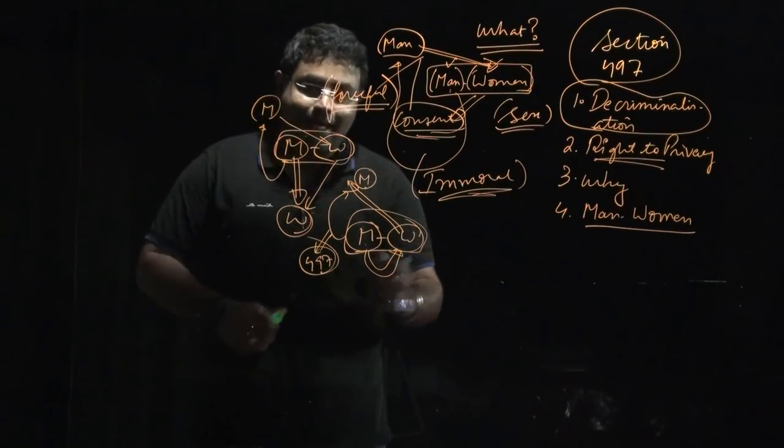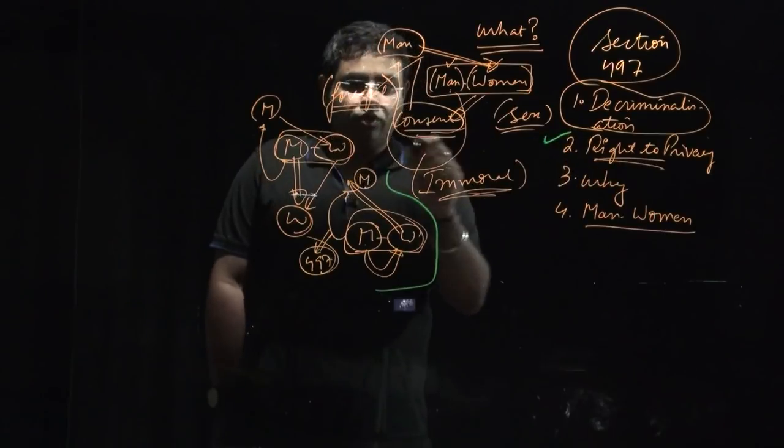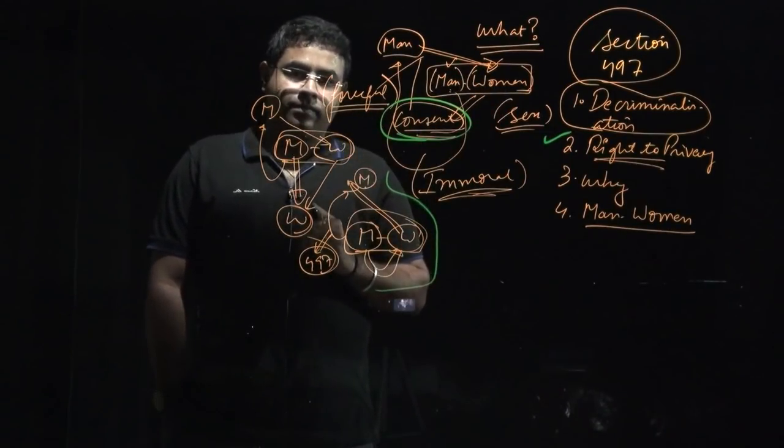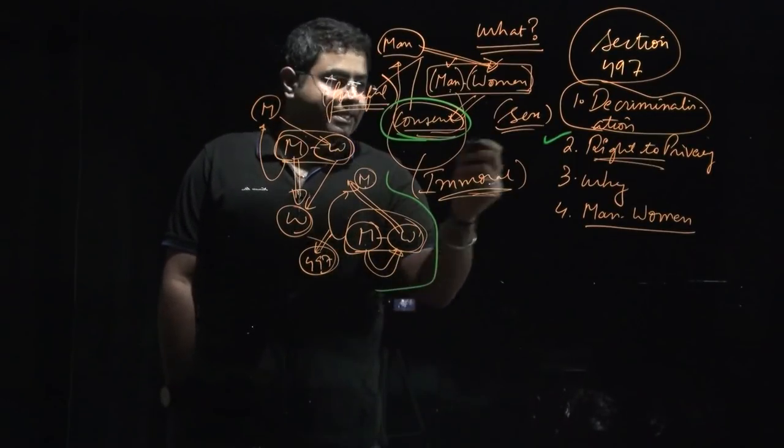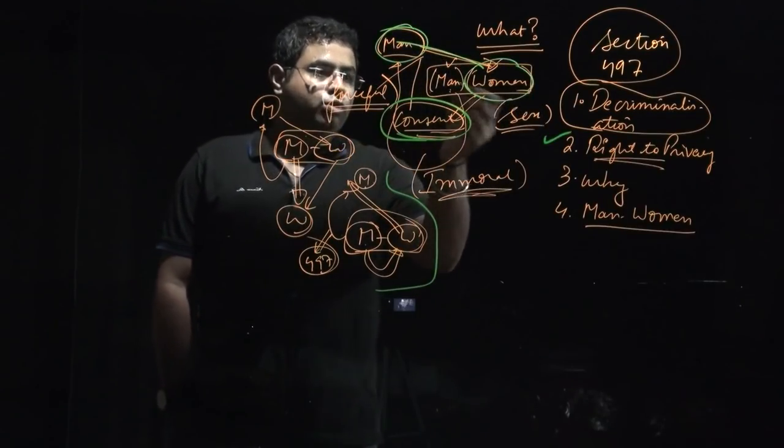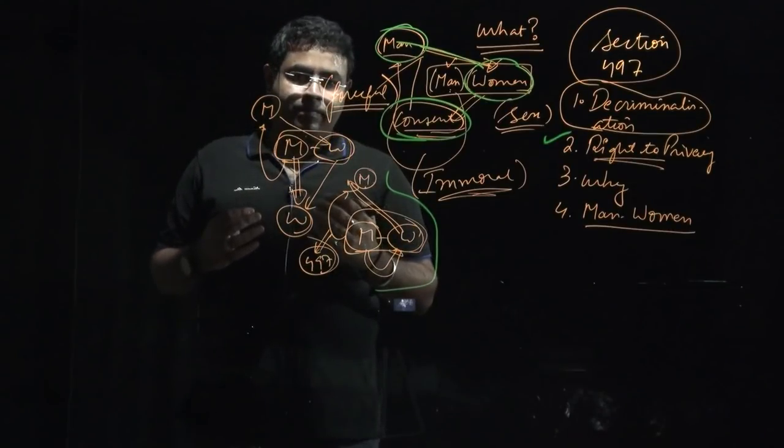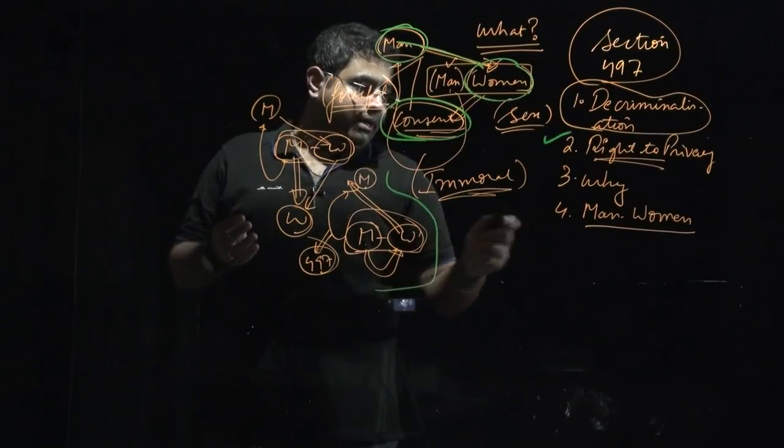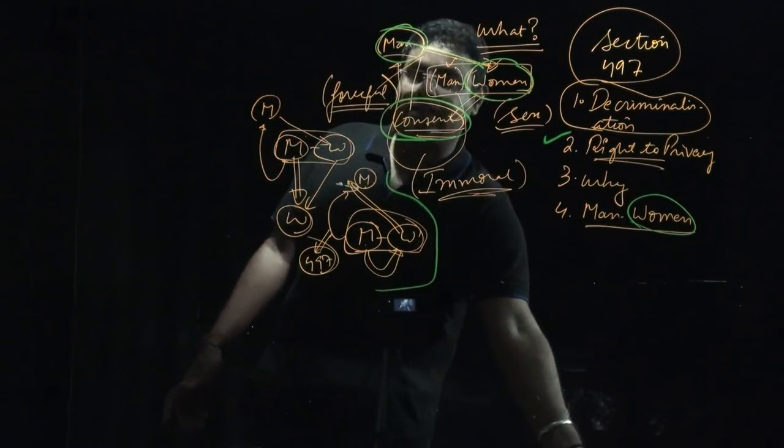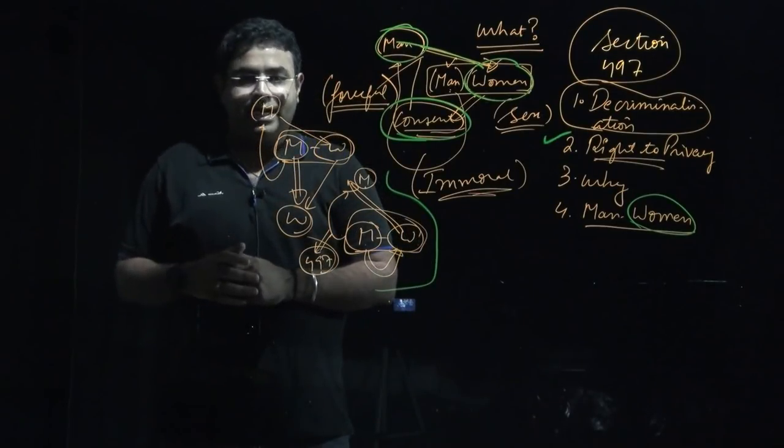This is the aspect of the law that is criticized. This law is criticized on various grounds. There is decriminalization, privacy, and the concern that with consent, the institution of marriage will be ruined. If any woman goes outside and has an affair, then marriage will have no meaning, morality will have no meaning. And some liberal people say that women should also have the right to file a complaint against their husband if the husband is indulging in extramarital activity. This entire issue is about Section 497 and CrPC Section 198 subsection 2.